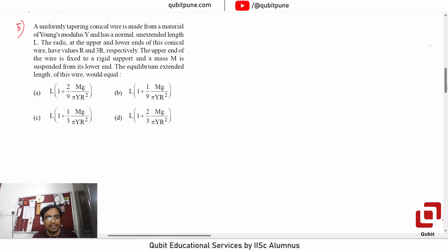So basically if we find the extension of the wire, the total extension of the wire, we can say that's our answer. And even then mg upon pi Y R squared is there, we just need to find the coefficient.